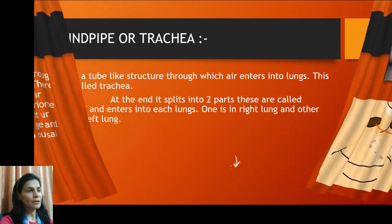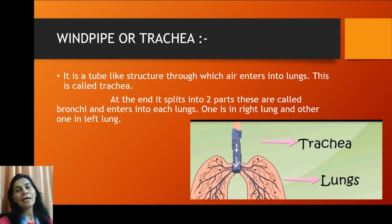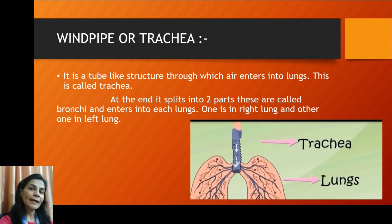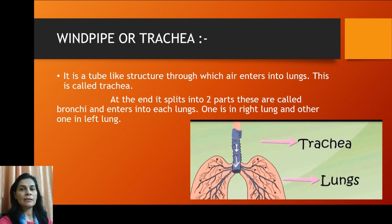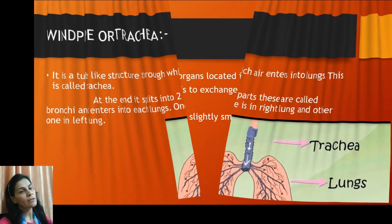The next organ is the windpipe or trachea. It is a tube-like structure, as you can see in the picture, through which air enters our body and goes to the lungs. At the end, it splits into two parts called bronchi — one towards the right lung and another towards the left lung.